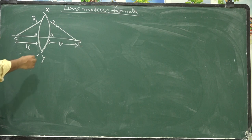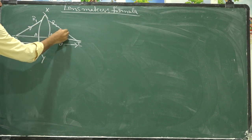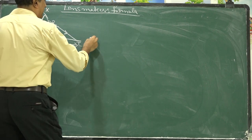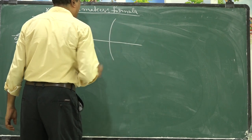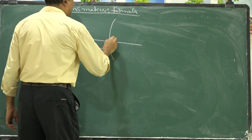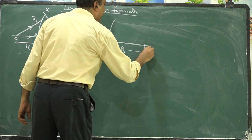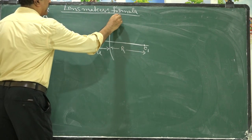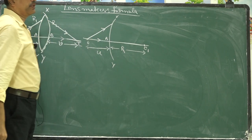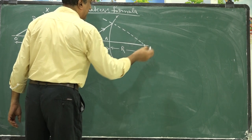First, consider refraction at only the first curved surface XAY, assuming the second surface is absent. The object O is at distance U from the pole A, with radius of curvature R1 and center of curvature C1.